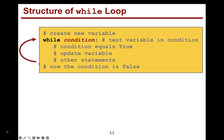After the while loop, the condition is false. This becomes that loop — hopefully you can see this circle: we loop, loop, loop until it is done. This is the core of while loops.